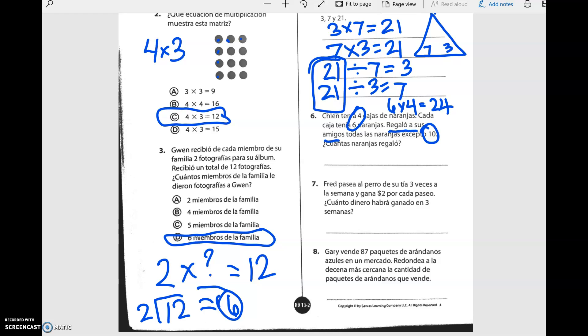Regaló a sus amigos todas las naranjas excepto diez. She gave away all of them but ten. We can still subtract ten from this, but the number we're looking for is how many she gave away. So if she's got ten left, vamos a restar. Cuatro menos cero es igual a cuatro. Dos menos uno es igual a uno. Así que ella regaló catorce naranjas.